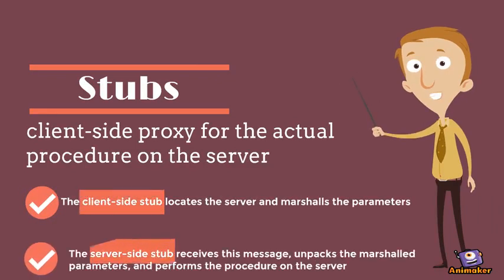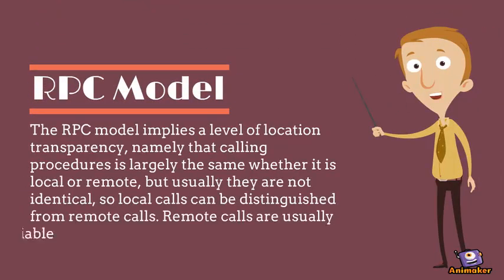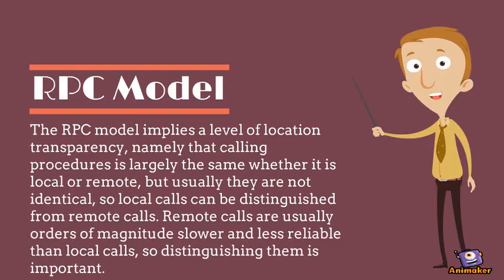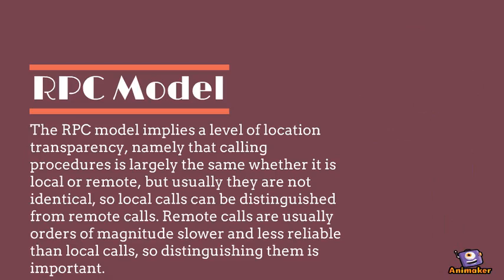The RPC model implies a level of location transparency, namely that calling procedures is largely the same whether it is local or remote. But usually they are not identical, so local calls can be distinguished from remote calls. Remote calls are usually orders of magnitudes slower and less reliable than local calls, so distinguishing them is important.